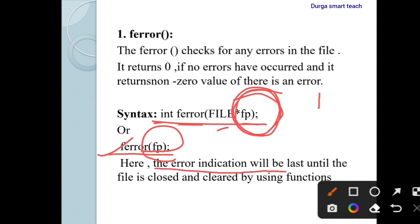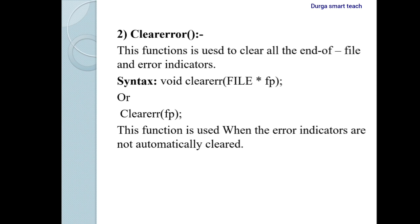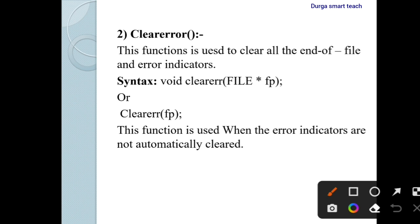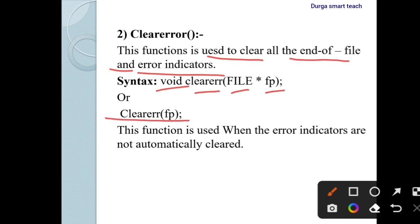The error indication will last until the file is closed and cleared by using functions. By using functions, we can easily correct those types of errors. The next function is clearerr. By using this function, we can clear all the end-of-file and error indicators. The syntax is: void clearerr(FILE *fp). This function is used when the error indicators are not automatically cleared — we can clear those error indicators by using clearerr.